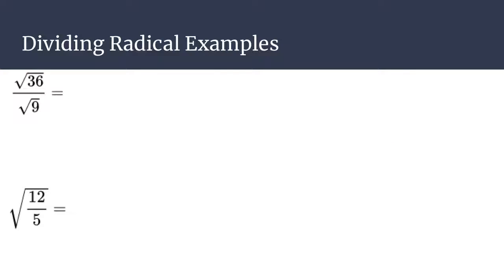Let's take a look at this first example, where you have the square root of 36 over the square root of 9. The top simplifies to 6 and the bottom is just 3, which then reduces to 2. And that would be your final answer. Pretty simple.